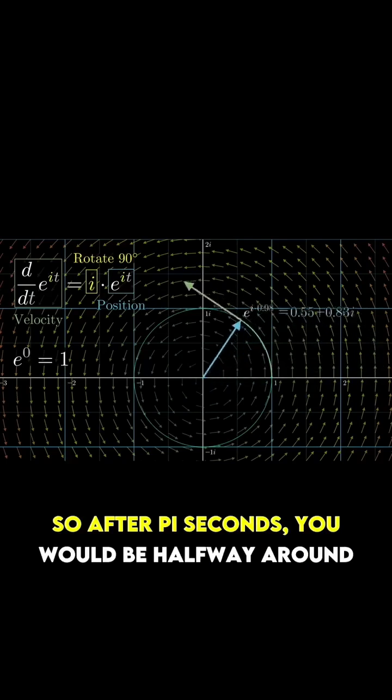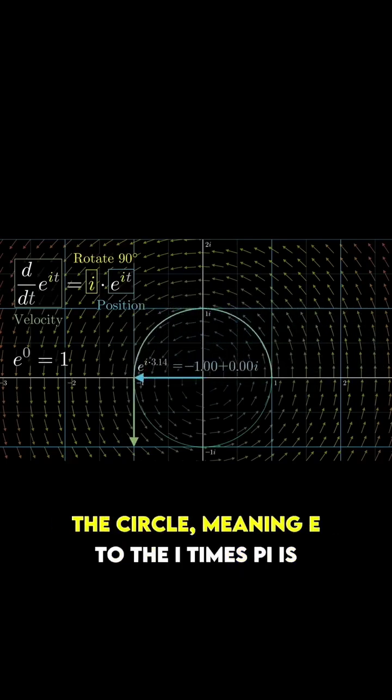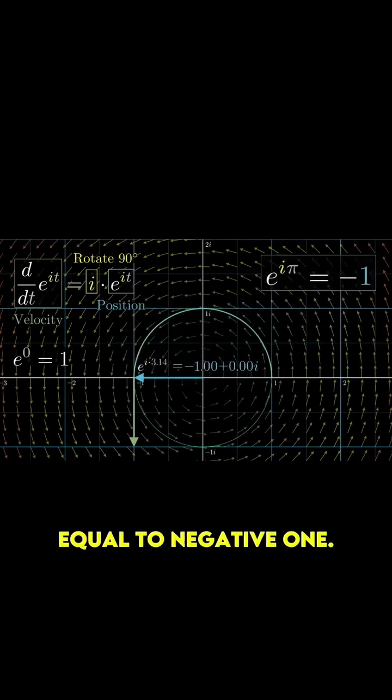So, after pi seconds, you would be halfway around the circle, meaning e to the i times pi is equal to negative one.